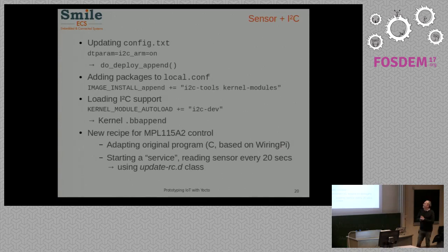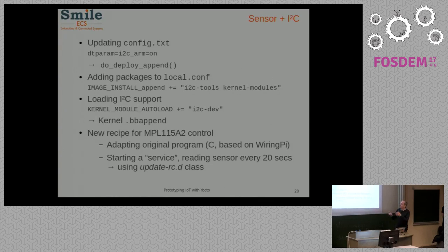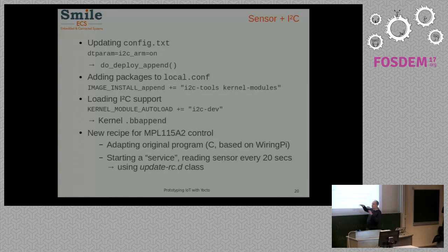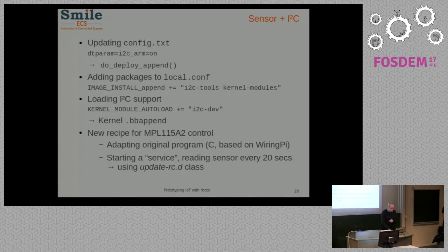Enabling I2C for the Raspberry Pi is straightforward: we modify config.txt and add a function executed after the deployment phase — do_deploy_append — to modify the file and add I2C tools and kernel modules, since the basic distribution doesn't include them. We then modify the kernel recipe to add automatic loading of i2c-dev. We also wrote a small C control program based on wiringPi — a library for Pi peripherals — which was already packaged in the meta-raspberrypi layer, and started a basic service without systemd using a script that polls the sensor every 20 seconds.